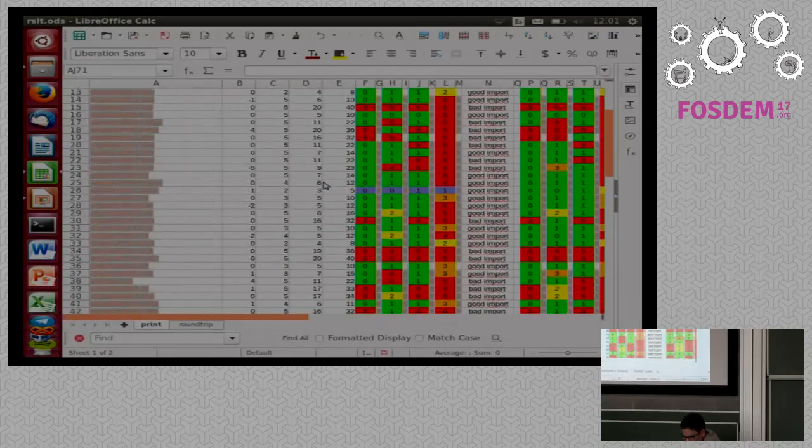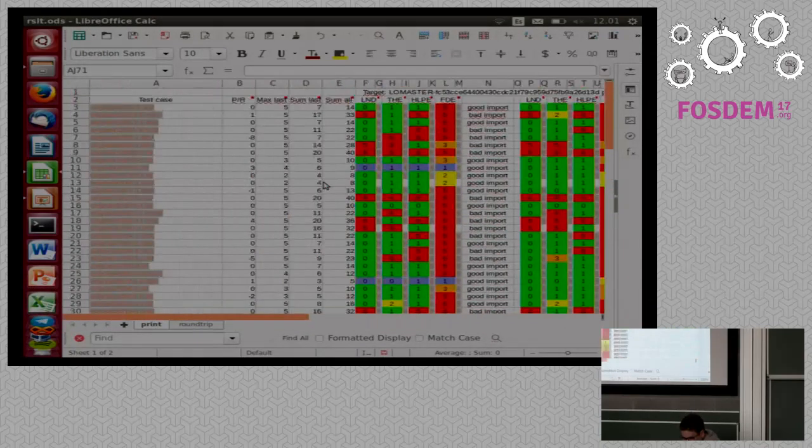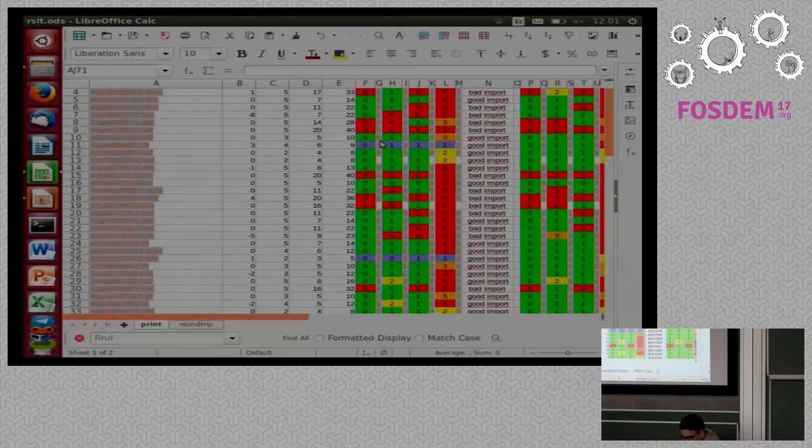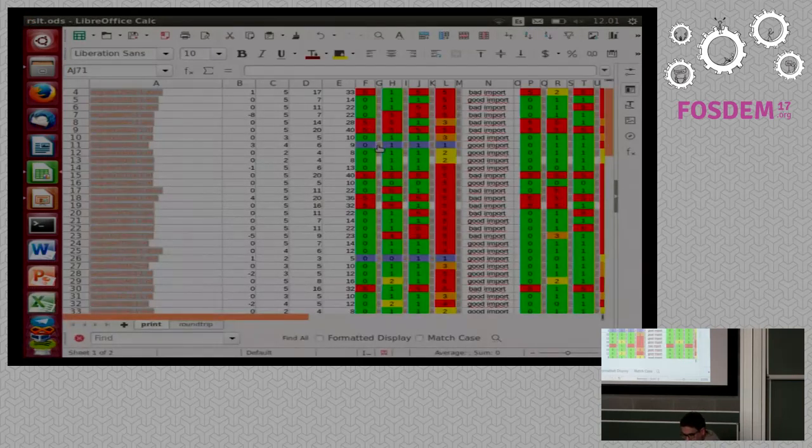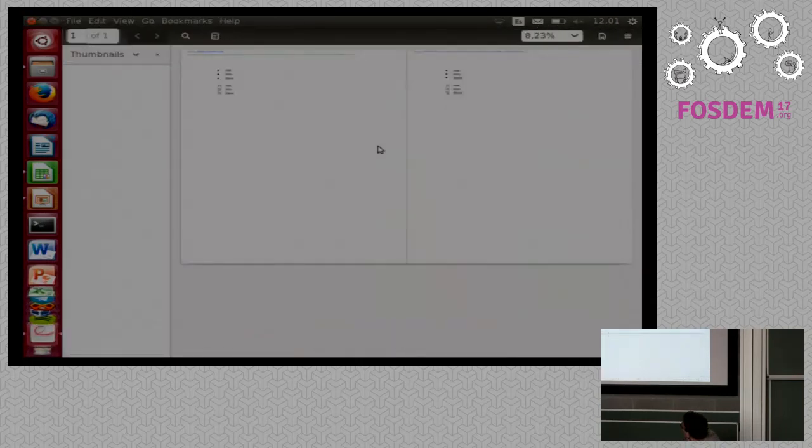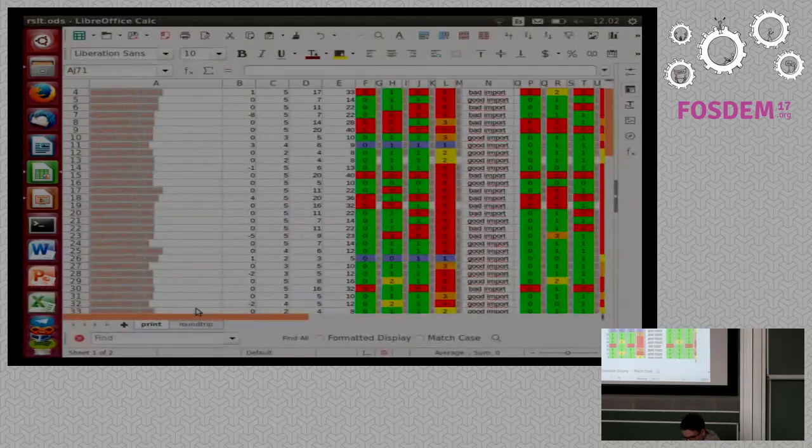You can also use it to see improvements. Here you have this one, this was in LibreOffice 5.2. I think this one, the bullets were incorrect. But here, if we check it with LibreOffice Master, they are correct. So we have an improvement here.